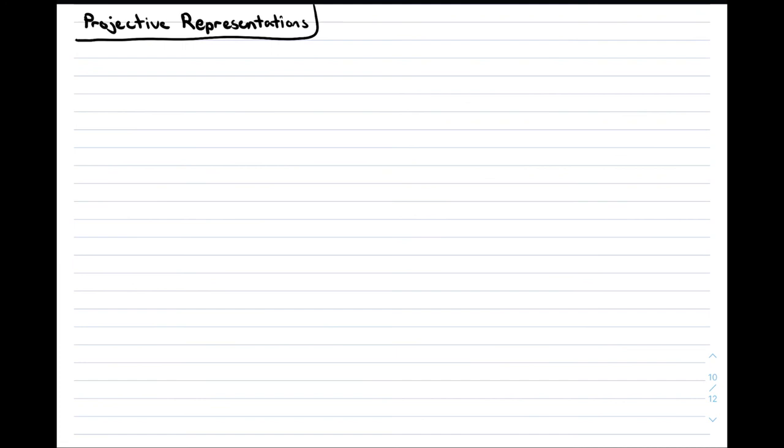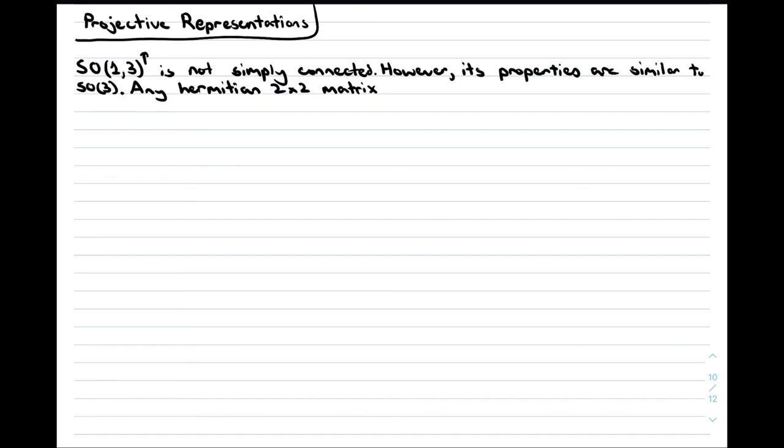To finish off the video, we'll have to talk about projective representations. I promised last video that we had already done all the hard work in this department. We can construct a homomorphism that is eerily similar to the homomorphism between SO(3) and SU(2). Any Hermitian complex 2x2 matrix can be expressed as V_μ σ^μ. V_μ here is a four vector with its index lowered, and σ^μ is a four vector of sigma matrices, with σ^0 being the identity, and σ^i being the standard Pauli matrices. The determinant of this matrix is V_μ V^μ, i.e. the length of the four vector in Minkowski space. So if we can find a transformation that preserves the determinant, we can use it to define an element of SO(1,3).